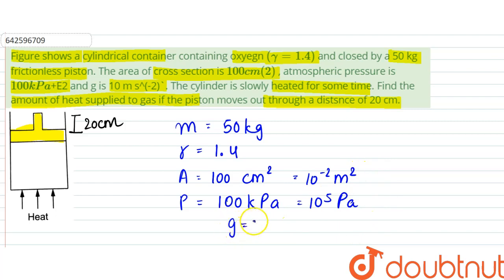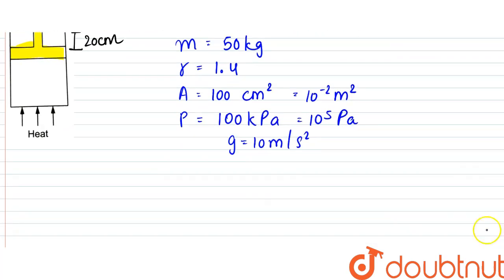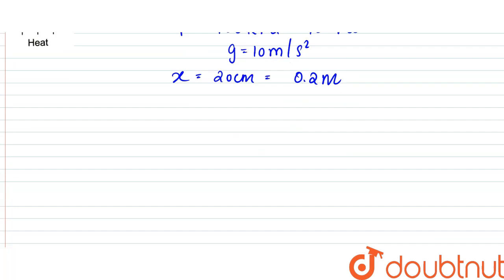g is equal to 10 meter per second square. The distance moved by the piston is 20 centimeter which is equal to 0.2 meters. These are the data that has been provided in the question itself. So work done by the gas would be equal to P dV.